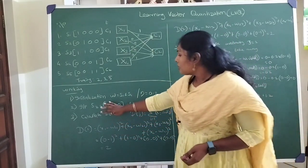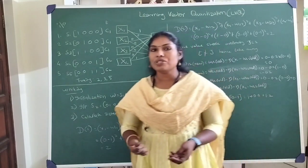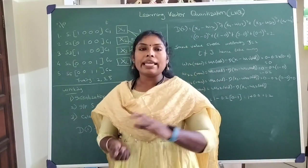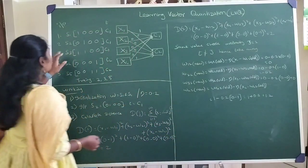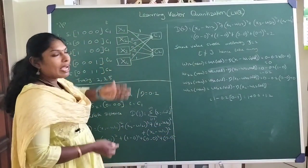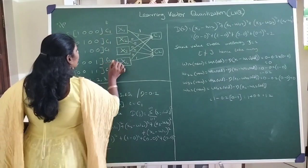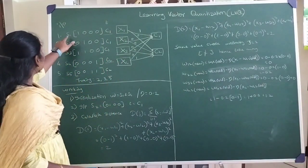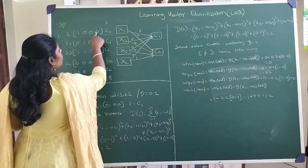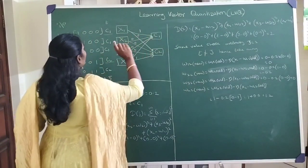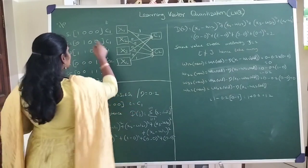The first step is initialization. For initialization, the algorithm works by taking some input pairs and assigning them to the weight vector. We take two input pairs: one belonging to cluster 1 and another belonging to cluster 2. The first input pair is [1, 0, 0, 0], which belongs to cluster 1, so all connections to cluster 1 take this value.